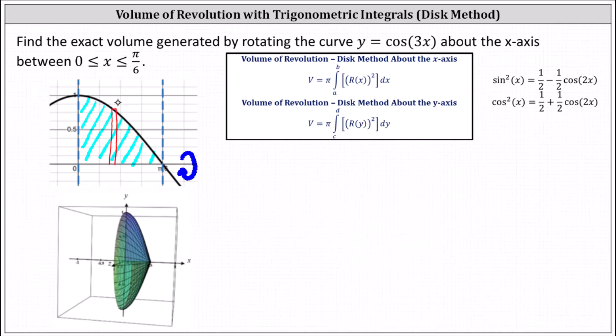Notice the thickness of the rectangle is a change of x or delta x. This indicates we integrate with respect to x, and we use the formula for the disk method about the x-axis, where the volume equals pi times the integral from a to b of the square of big r of x dx, where r of x is the radius function. Notice in our case, the radius function is simply the function value given by y equals cosine 3x.